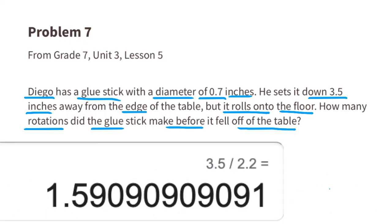Since the glue stick was placed 3.5 inches away from the edge of the table, it was able to make approximately 1.6 rotations, because 3.5 divided by 2.2 is approximately 1.6.